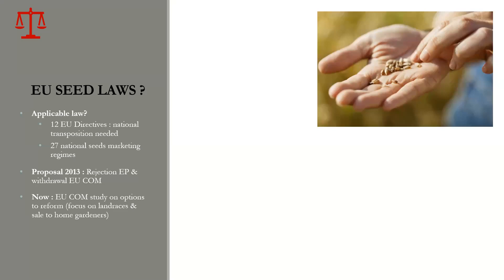The EU seed laws are basically made of 12 EU directives. In EU law you have two main bodies of law: regulations, which are directly applicable in different member states, whereas directives need to be transposed. The entire EU seed marketing acquis is comprised of directives, and that is why you had up until a few months ago 28 national seed marketing regimes — now 27 because of Brexit — due to that national transposition. There was a proposal to change this entire acquis and transform it into a regulation in 2013, but the proposal was rejected by the European Parliament and withdrawn by the European Commission.